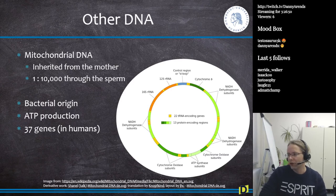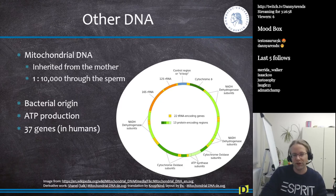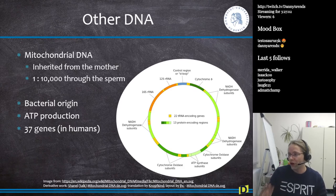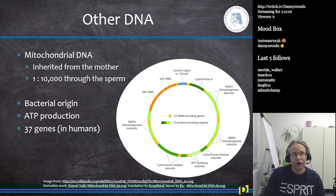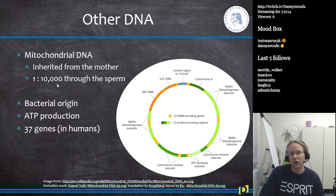We're almost done — just a couple more slides. Mitochondria are really important in multicellular organisms because they produce energy, you get them from your mother, and only about 1 in 10,000 people have mitochondria that come from the father.